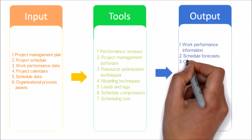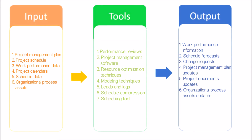Now let's see the output of this process. Work Performance Information: The calculated SV and SPI time performance indicators for WBS components, in particular the work packages and control accounts, are documented and communicated to stakeholders. Schedule Forecasts: Schedule Forecasts are estimates or predictions of conditions and events in the project's future based on information and knowledge available at the time of the forecast. Additional outputs include Change Requests, Project Management Plan Updates, Project Documents Updates, and Organizational Process Assets Updates.